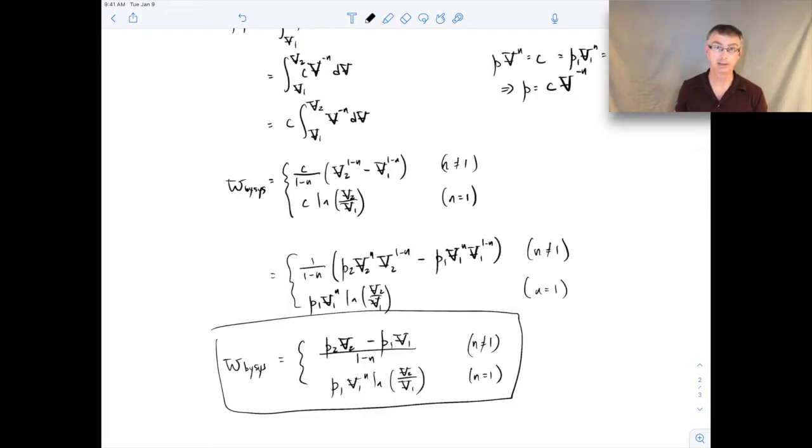So that's the amount of work done by the system in a polytropic process. And that's true for whether the gas is ideal or not ideal.